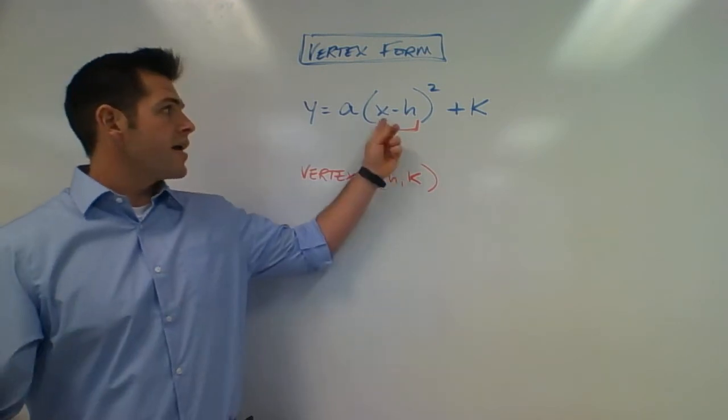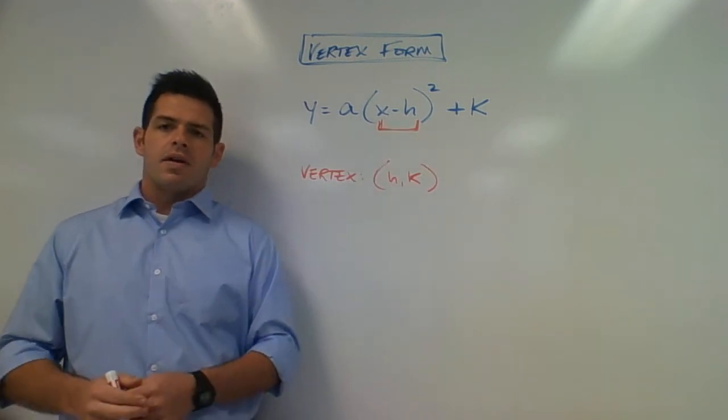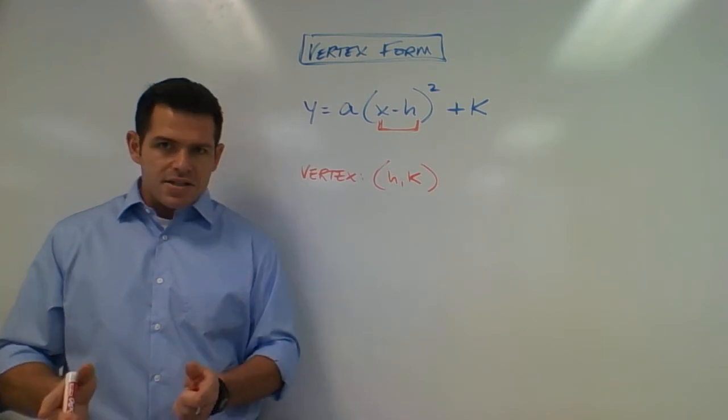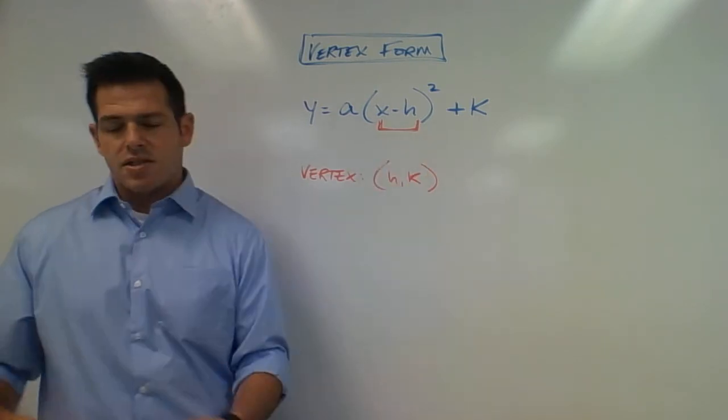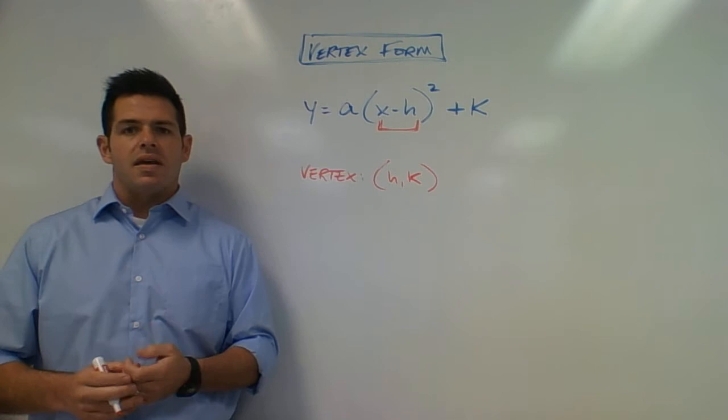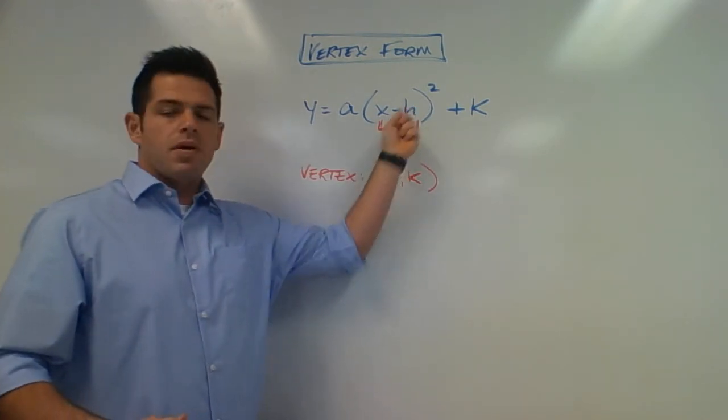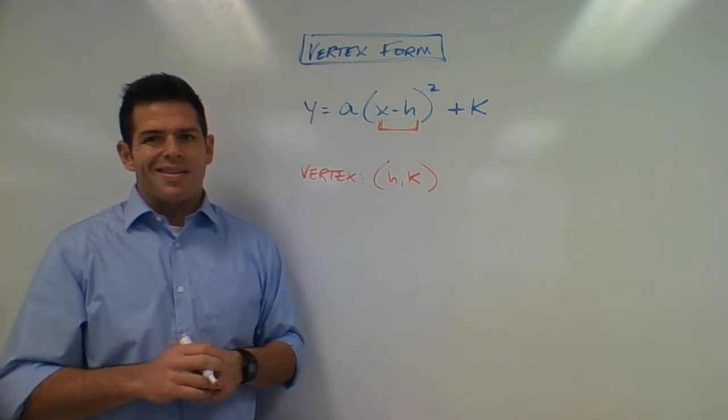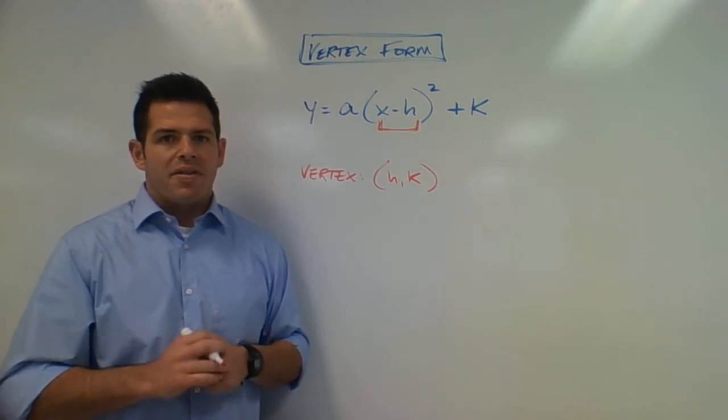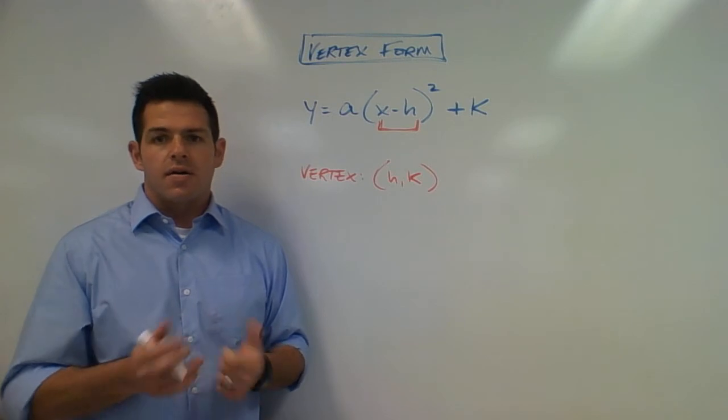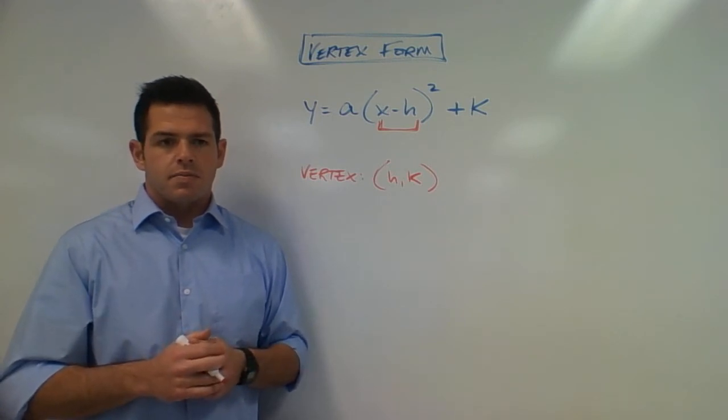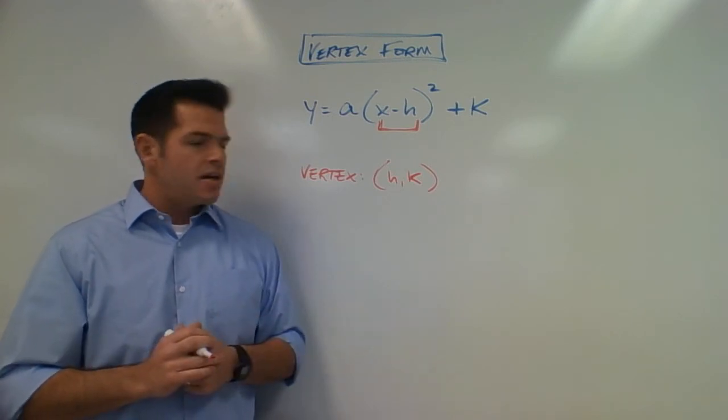So if there was x minus 5 up there, the h value would be positive 5. If it was x plus 3 up there, the h value would be negative 3. So whatever value for x we would be able to plug into there and get the number 0 back out, that is what will give us our h value for this problem. So we know h comma k here would be the vertex.